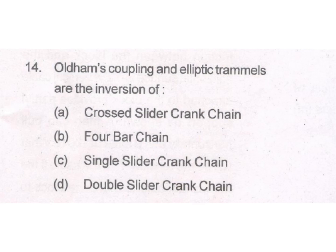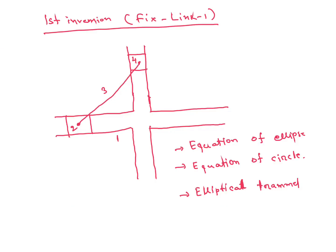Oldham's Coupling and the Elliptical Trammel are inversions of the double slider crank chain. From the options, D is the answer. In the double slider crank chain, links 2 and 4 are the two sliders, link 3 is the connecting rod, and link 1 is the frame.